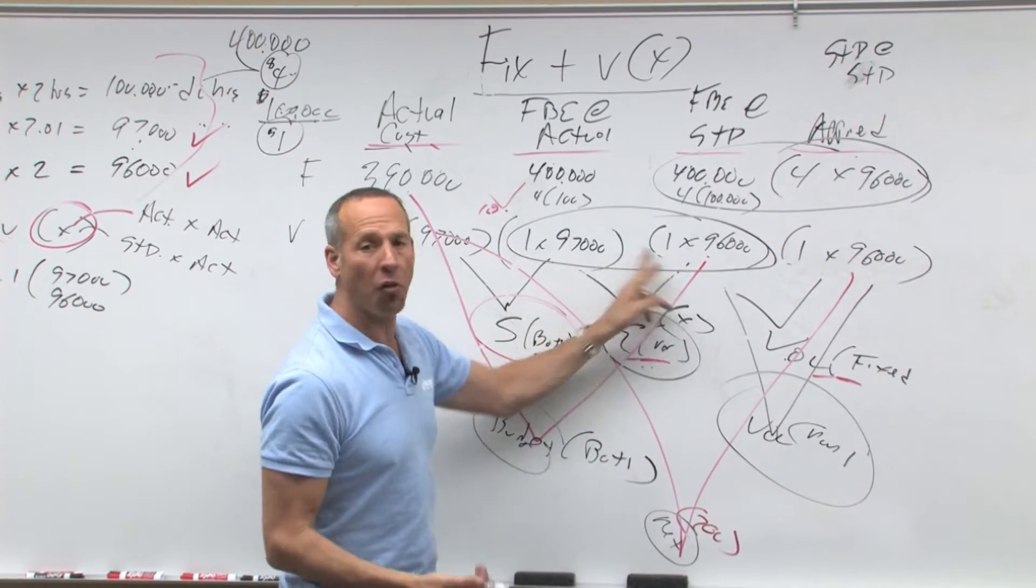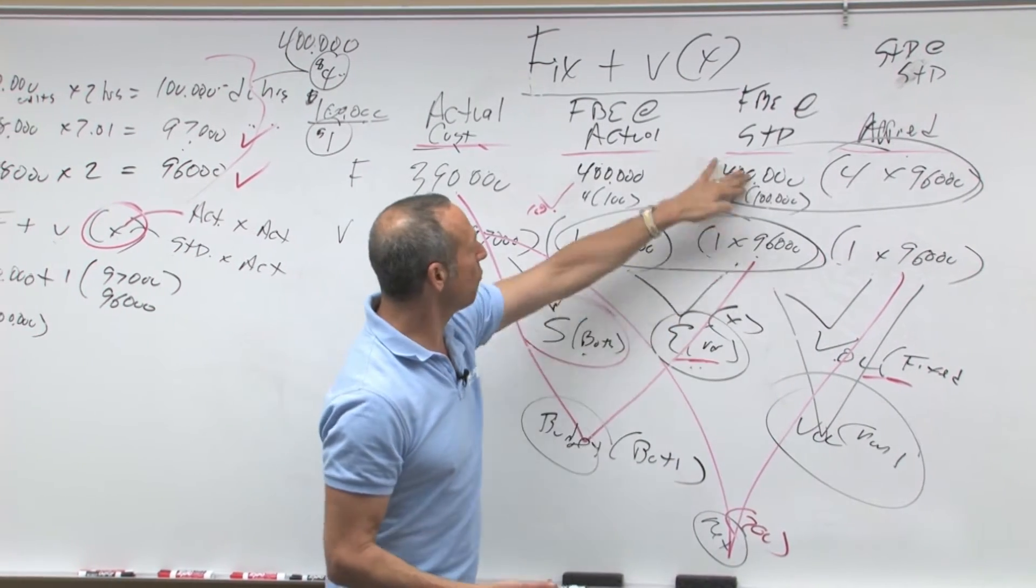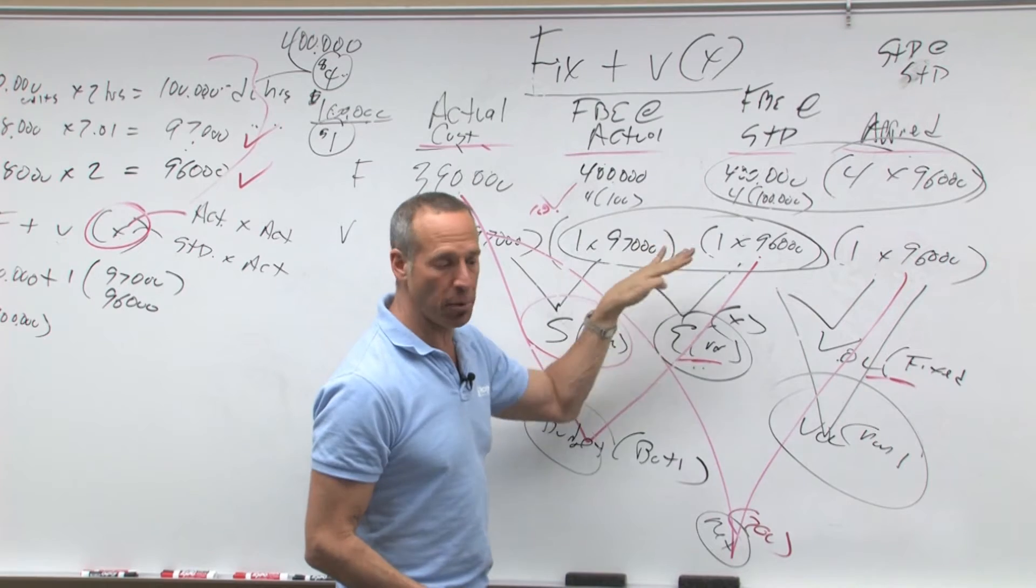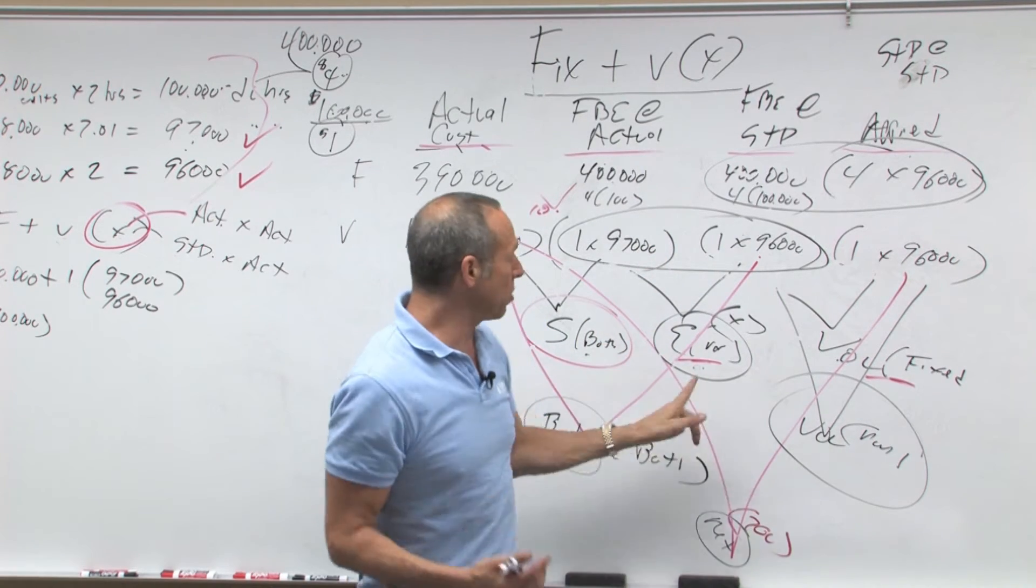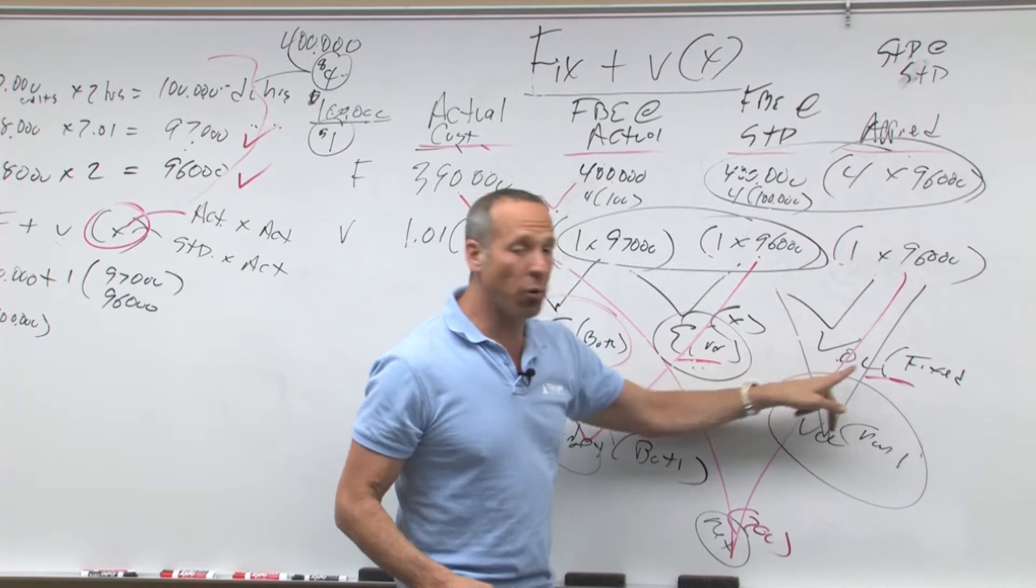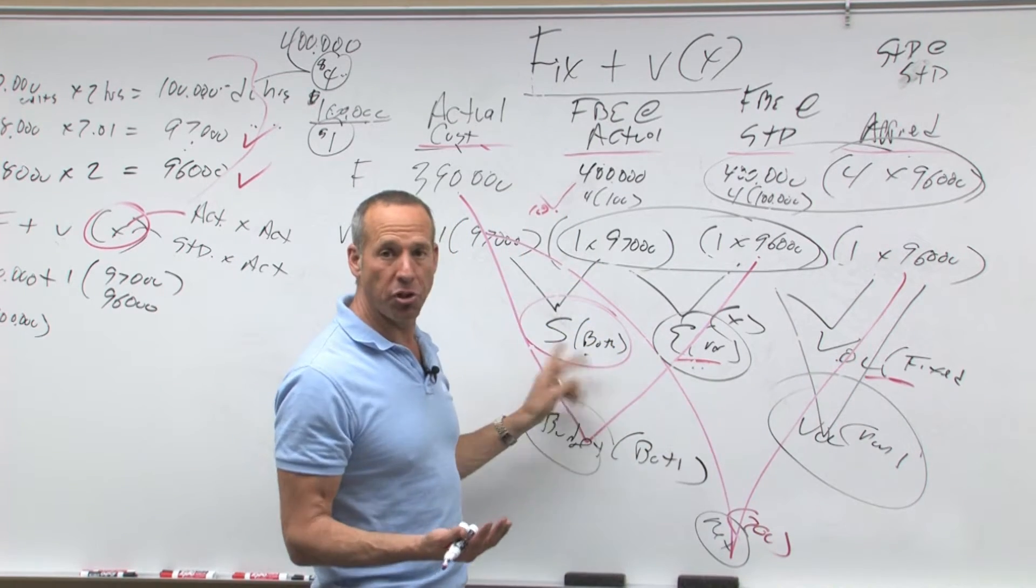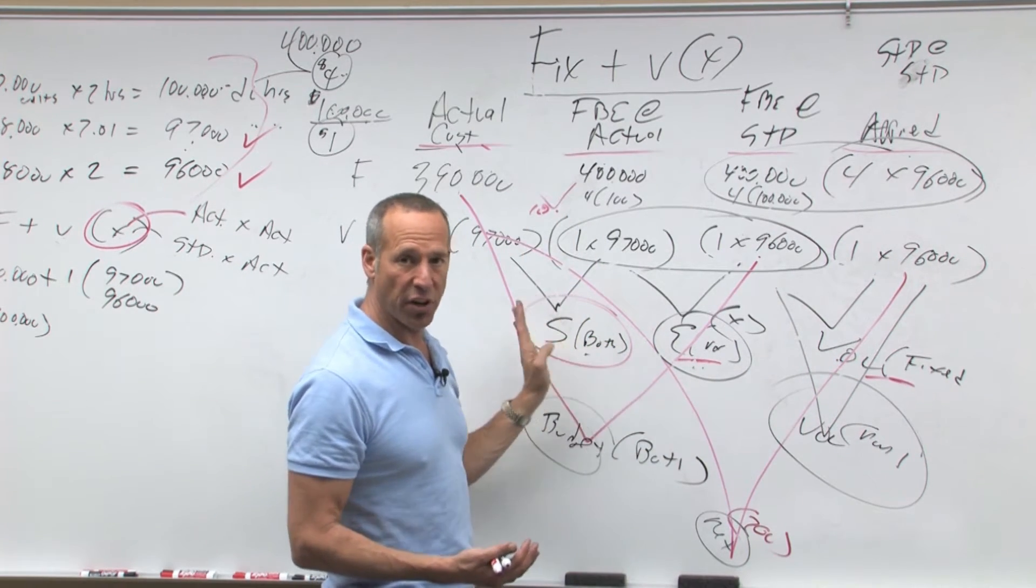Now remember, this variance is all variable anyway, right? There's no fixed. Fixed is the same, it's only variable. They could have just said efficiency variance, you should know it's variable. Volume variance you know is fixed. This one is both, so you'd have to figure it out. But here, this is all variable.